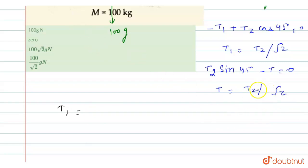T2 equals root 2 times T divided by root 2. This root 2 cancels with this root 2 and we get the answer T, which equals 100g Newton. So T1 tension equals 100g Newton.